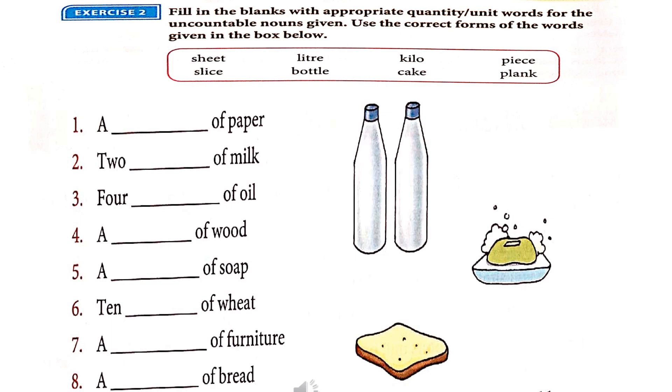Exercise number 2. Fill in the blanks with appropriate quantity or unit words for the uncountable nouns given. Use the correct form of the words given in the box below. Here you can see a box. There are some words.